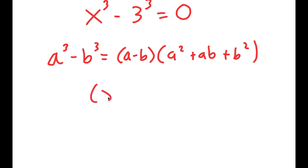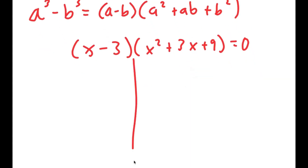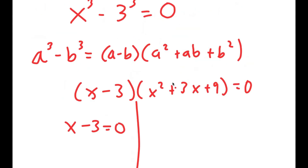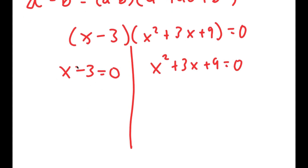So this turns into x minus 3 times x squared plus 3x plus 9 is equal to 0. From here, I get two equations: x minus 3 equals 0, and x squared plus 3x plus 9 is equal to 0. So obviously for x minus 3 equals 0, x is equal to 3.